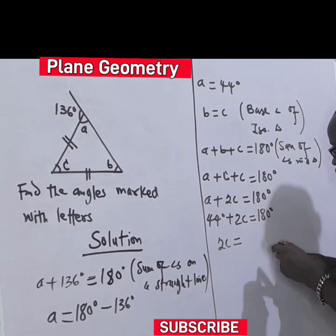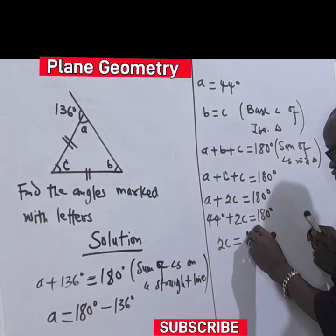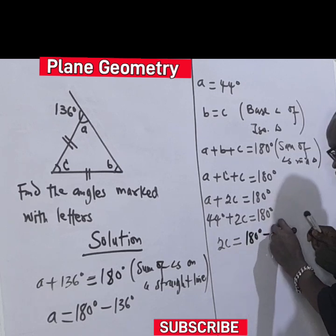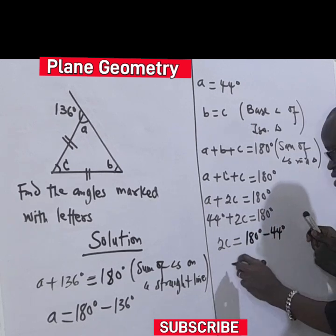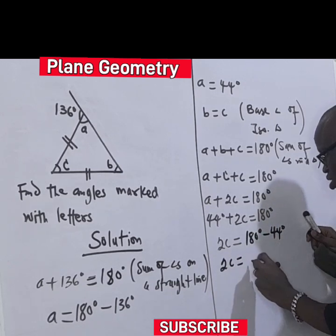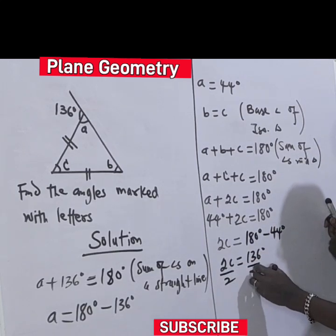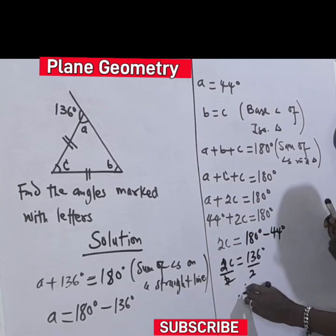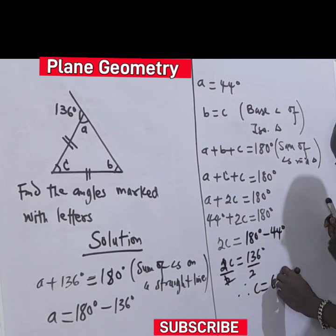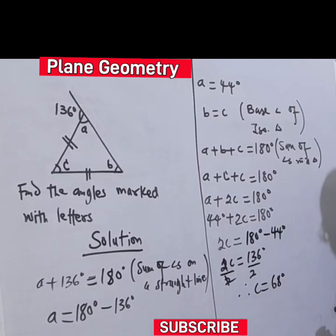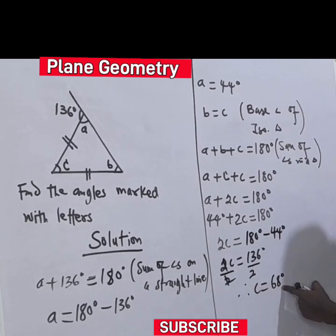Let's transpose 44, so this will be minus 44 degrees. 2C is equal to 136 degrees. Divide both sides by 2. Therefore C is equal to 68 degrees.